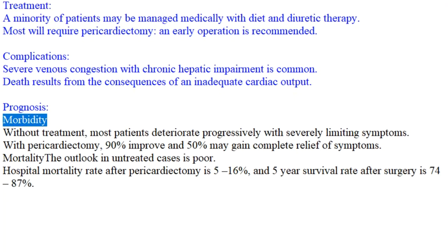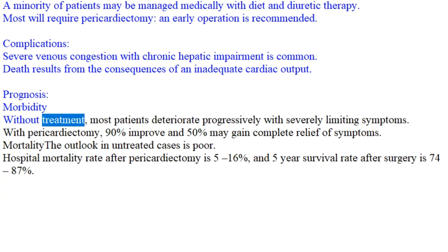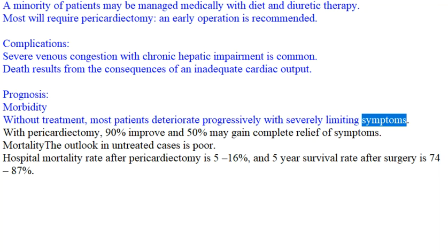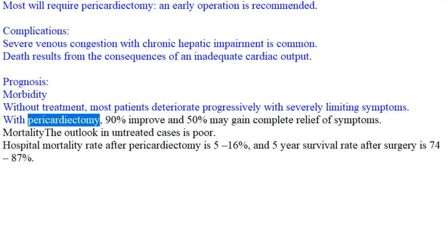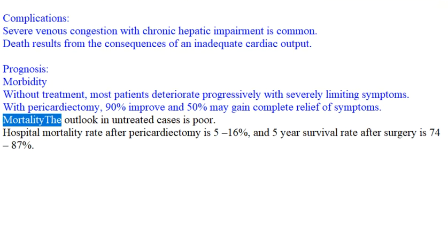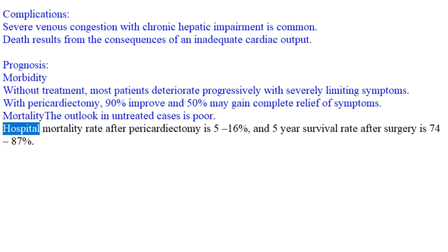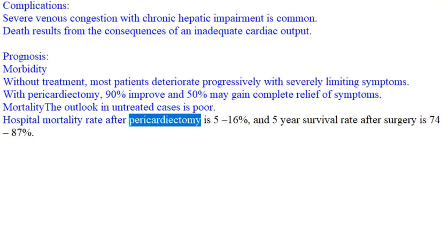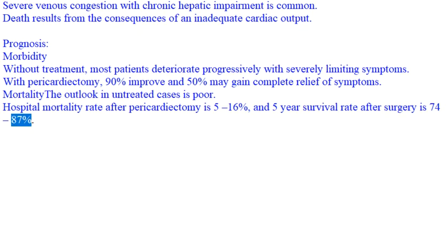Prognosis — Morbidity: Without treatment, most patients deteriorate progressively with severely limiting symptoms. With pericardiectomy, 90% improve and 50% may gain complete relief of symptoms. Mortality: The outlook in untreated cases is poor. Hospital mortality rate after pericardiectomy is 5–16%, and the 5-year survival rate after surgery is 74–87%.